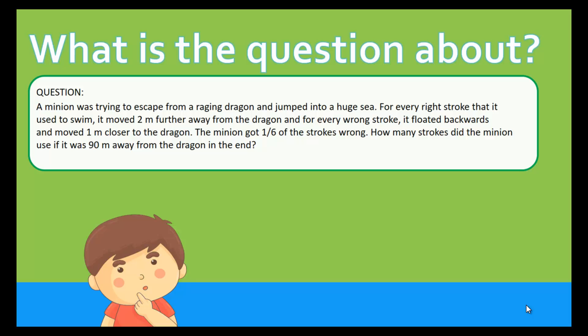So usually when we look at any math question in the exam or in your test, we need to take note of 3 main things. The first one is: who do we have? How many characters are being mentioned in the question? Here, we have the minion as well as the dragon, so we have 2 main characters.